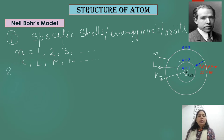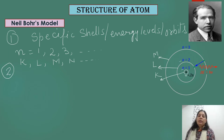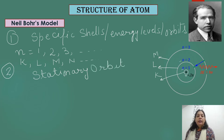The second postulate given by Niels Bohr states that when electrons revolve in these orbits — K, L, M, and so on — they have a specific amount of energy and they do not radiate or emit that energy. So these shells or orbits are also known as stationary orbits.